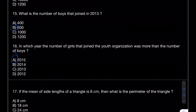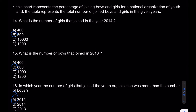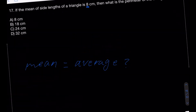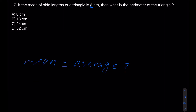Question 17 says: if the mean of the side lengths of a triangle is 8 centimeters, what is the perimeter? You have to know what mean is. Mean means average — you add all the values together and divide by the number of values. Let's apply that here.